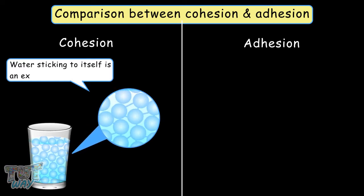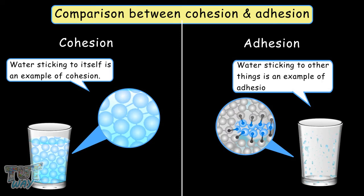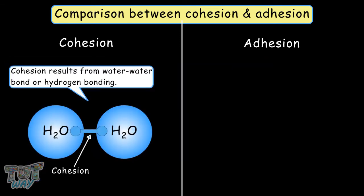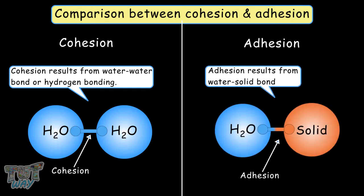Water sticking to itself is an example of cohesion. Water sticking to other things is an example of adhesion. Cohesion results from water-water bonds or hydrogen bonding. Adhesion results from water-solid bonds.